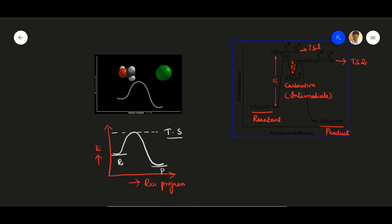In general, an organic reaction is the breaking of bonds in the substrate and the formation of bonds in the product, which takes place via transition states and intermediates in a sequence of steps — either one step or multiple steps. This sequence of simple steps that describes product formation from substrate is called the organic reaction mechanism.